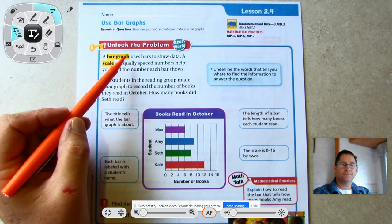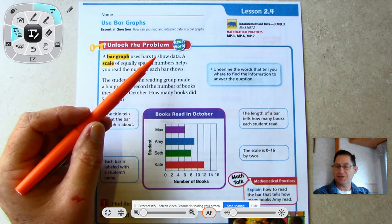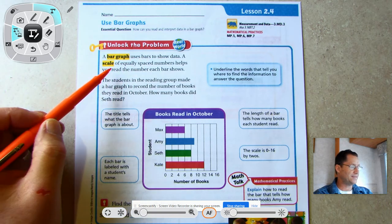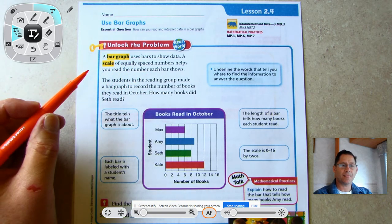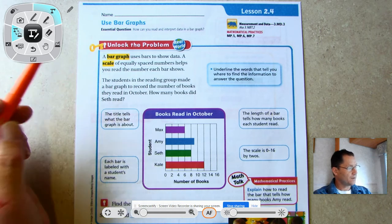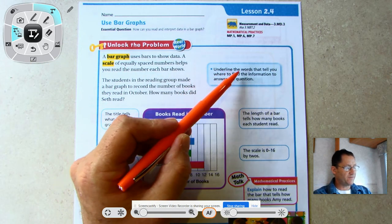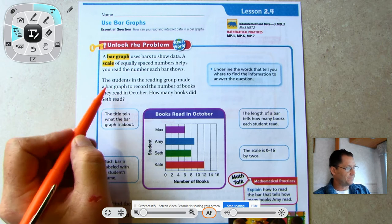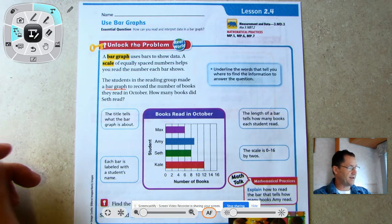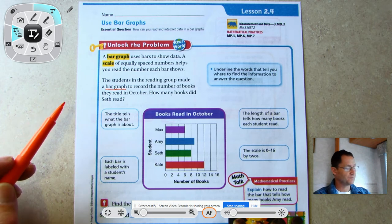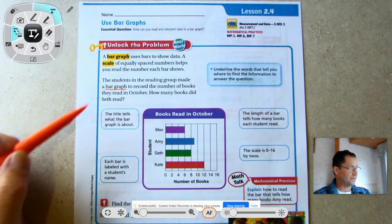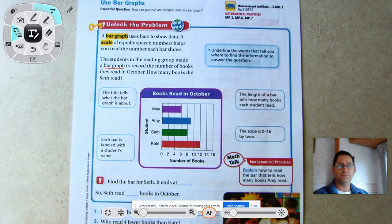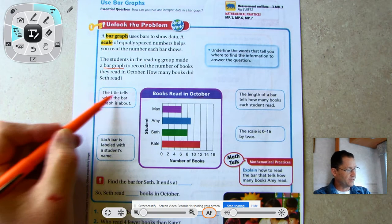Unlock the problem. A bar graph uses bars to show data. A scale of equally spaced numbers helps you read the number each bar shows. Underline the words that tell you where to find the information to answer the questions. The students in the reading group made a bar graph to record the number of books they read in October. The title at the top is 'Books Read in October.' The title tells what the bar graph is about.